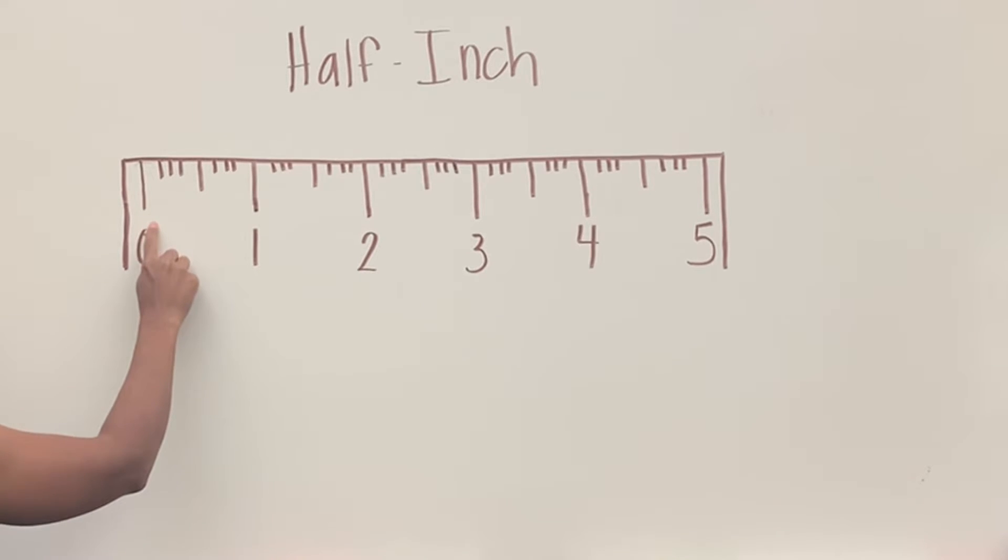I'll have my line for zero, or I'm going to just have the first line. Some rulers don't have zero, and then I'll have a few lines, but then I'll have one that's kind of longer than the rest before I get to one.